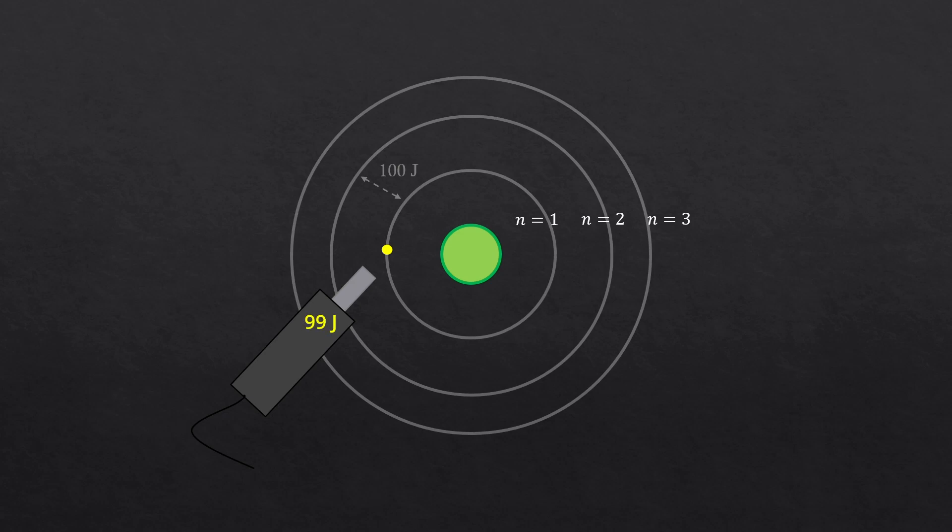That means, even if we provide 99 joules of energy to the electron, it still will not move. It needs exactly 100 joules or more to make the transition.